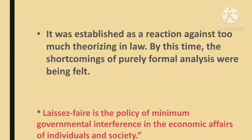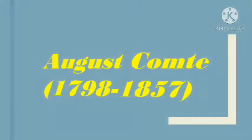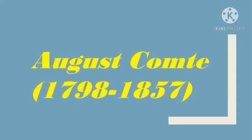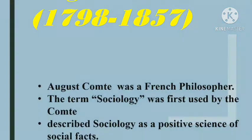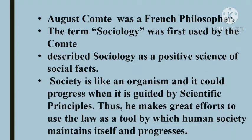First, Auguste Comte was a French philosopher. Auguste Comte was the first to use the word 'sociology.' He gave an organic theory in the sociological school. According to him, society is a living organism, and if society is guided by scientific principles, society can also progress like an organism. In short, law can be used to make a society progress.